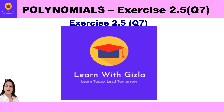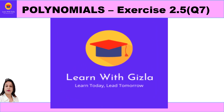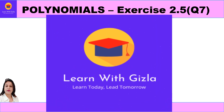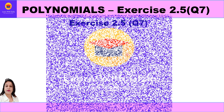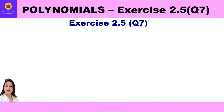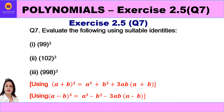Hello dear students, welcome to YouTube channel Learn with Gizla. In this video on polynomials, we shall be taking question 7 of exercise 2.5. Question 7 says: evaluate the following using suitable identities. So we have 99 cubed, 102 cubed, and 998 cubed.